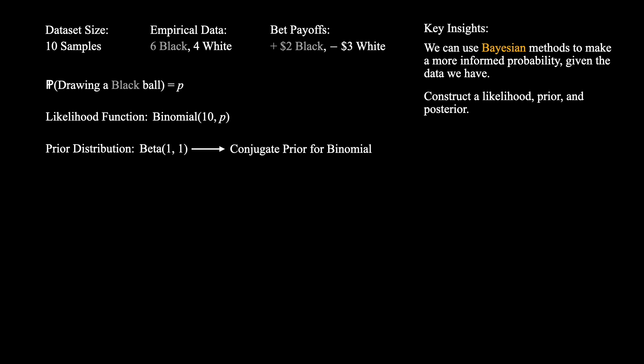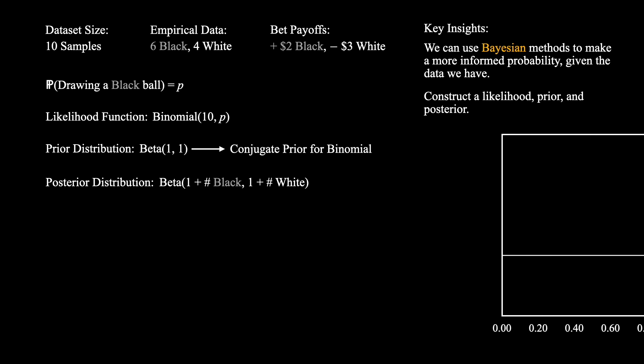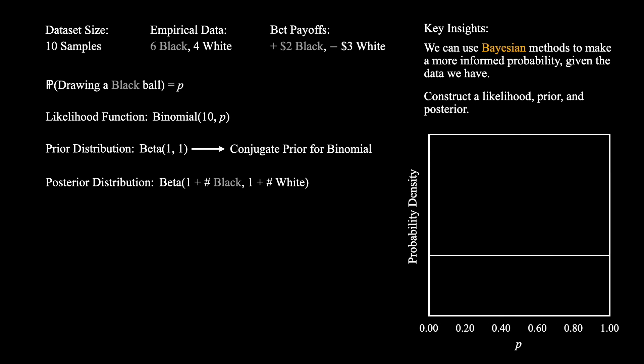The reason both parameters are 1 is because initially we are weighting both classes — black and white — equally, saying that we have no prior assumptions about what their probabilities will be. To move from our prior to our posterior, we simply add the number of black balls and white balls we observe once we run our experiment. We can visualize this by drawing out the probability density function. Initially, with parameters 1, 1, the probability density is simply uniform over all possible values of the parameter p.